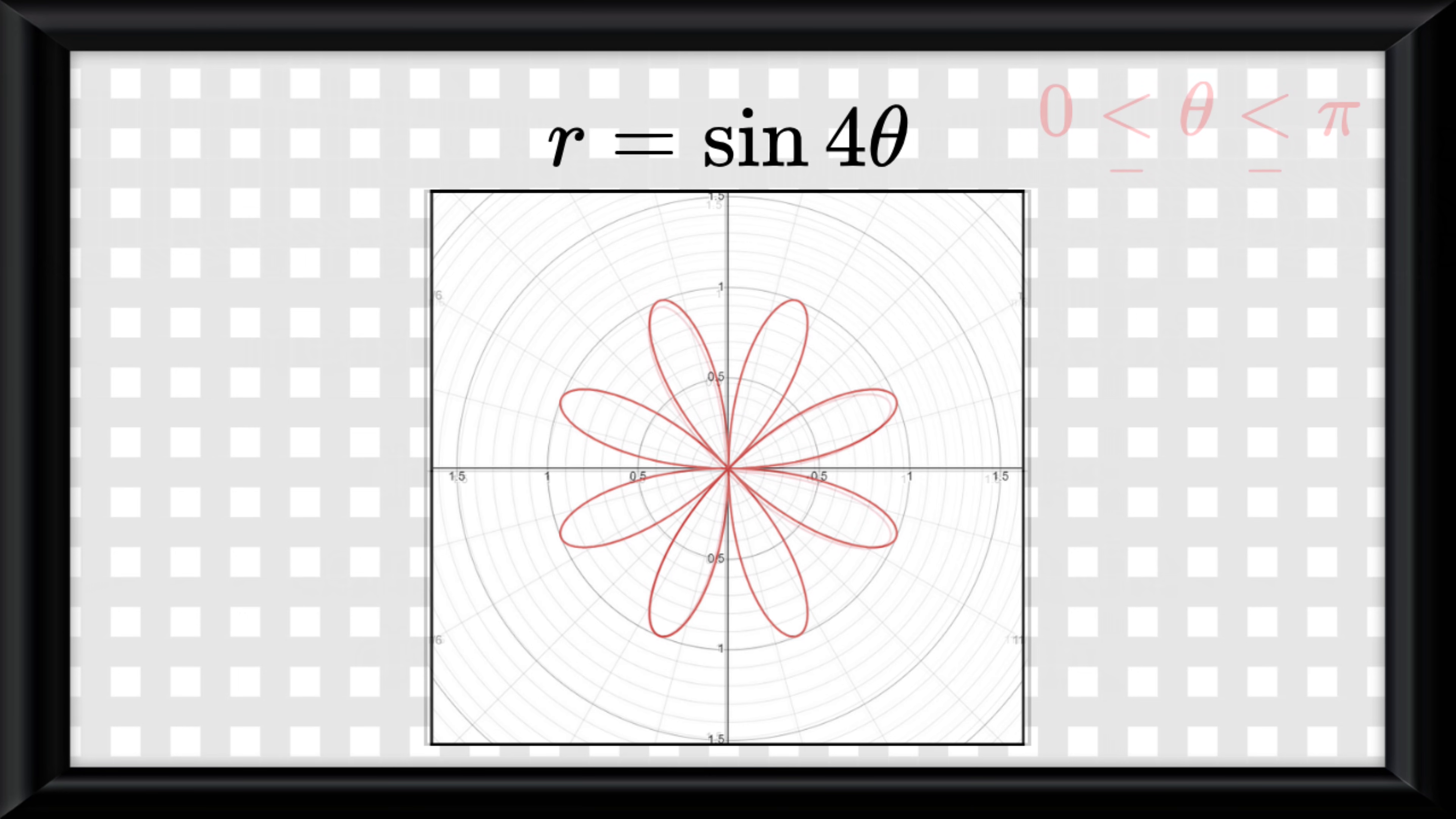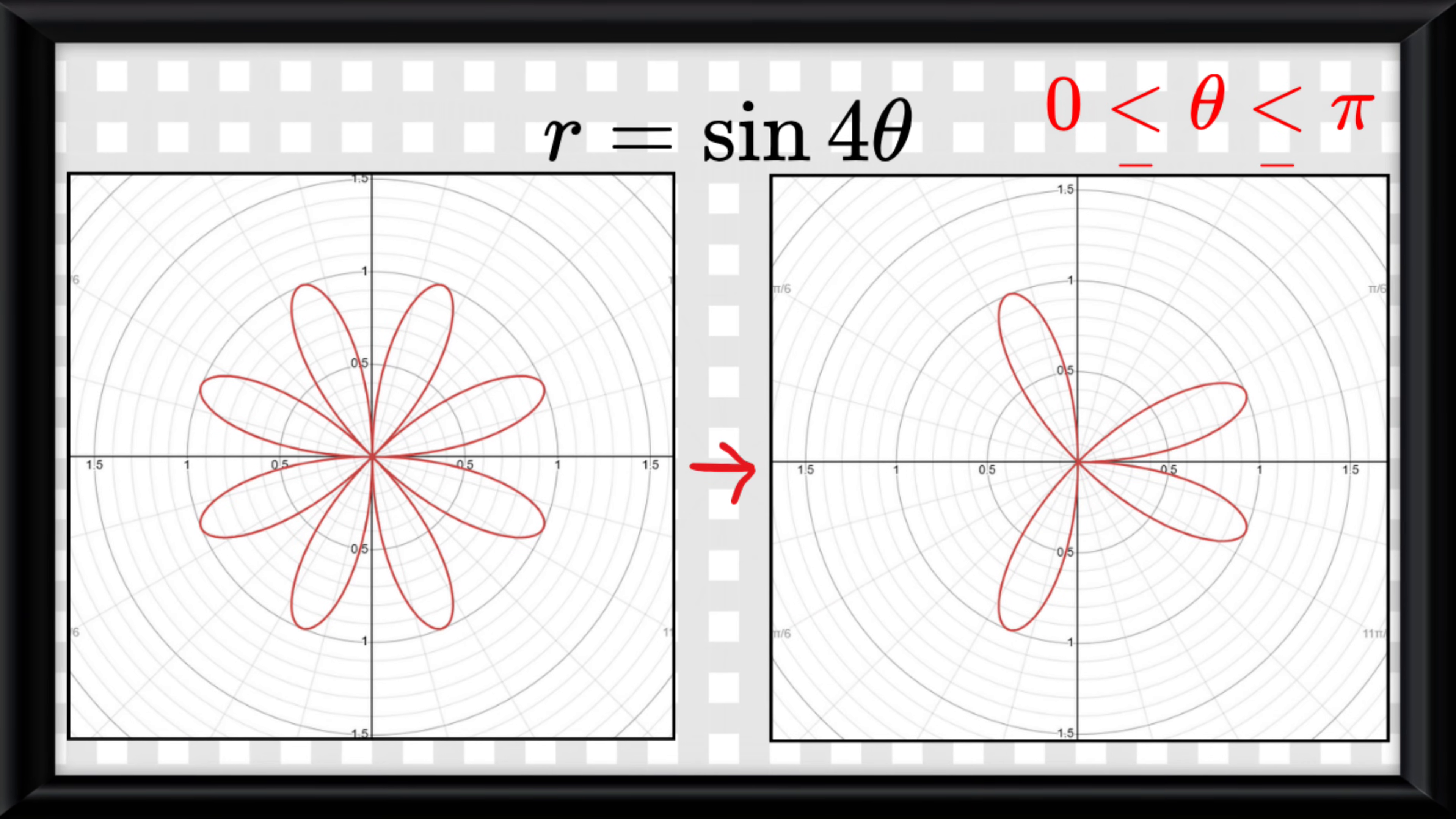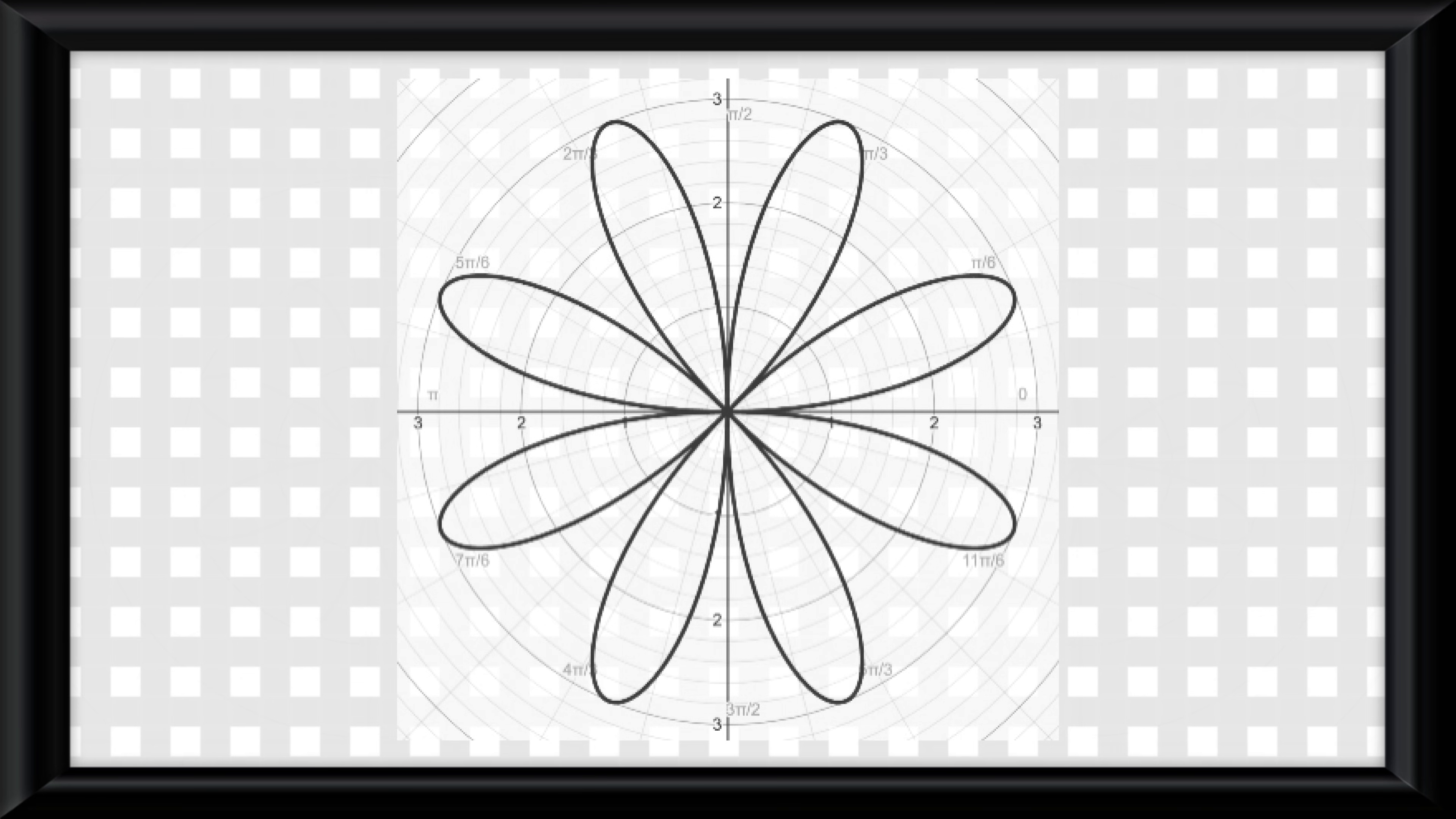You can restrict the domain of polar functions by limiting the range of theta values, which effectively cuts off part of the graph. But let's be real, we only really care about what the main shapes of the graphs are.